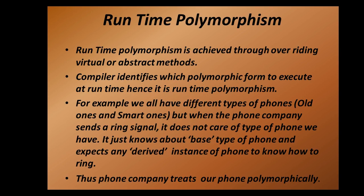Runtime polymorphism is achieved through overriding virtual or abstract methods. I already have a lecture recorded on overriding, so if you are new to this concept, please watch that lecture first. The compiler identifies which polymorphic form to execute at runtime — hence it is called runtime polymorphism. In contrast, with compile time polymorphism, the compiler knows at design time which overloaded version will be called.